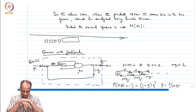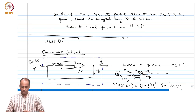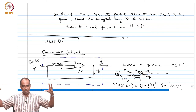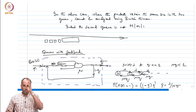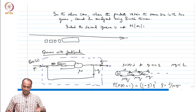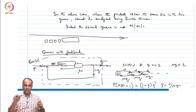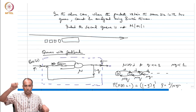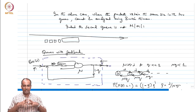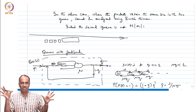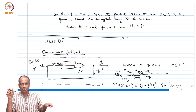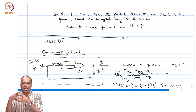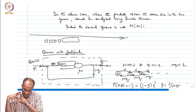Now that we have studied tandem queues with feed-forward, and queues with feedback, you could potentially take the output of Q1 and send it to Q3 with some probability, or to Q4 with another probability, making a big network of queues with exogenous inputs and departures routed from one queue to another. These kinds of systems are known as Jackson networks and that will be the topic of our discussion in the next module.